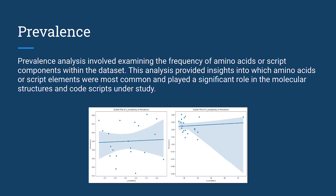Prevalence analysis involved examining the frequency or occurrence of amino acids within the dataset. This showed us the most common amino acids and shed light on the distribution and representation of elements in our dataset.